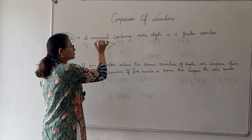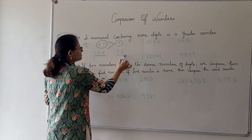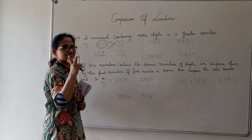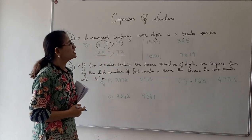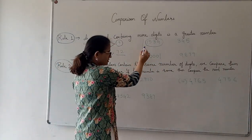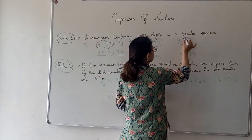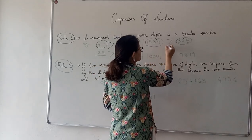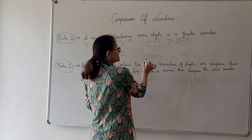So according to rule 1, the bigger number is obviously 47, so the crocodile sign will be towards 47. Same way, 128 and 72: 128 has 3 digits and 72 has 2 digits, so 128 is bigger. Another example: 1534 has 4 digits and 345 has 3 digits, so obviously 1534 is bigger because it has more digits than 345.